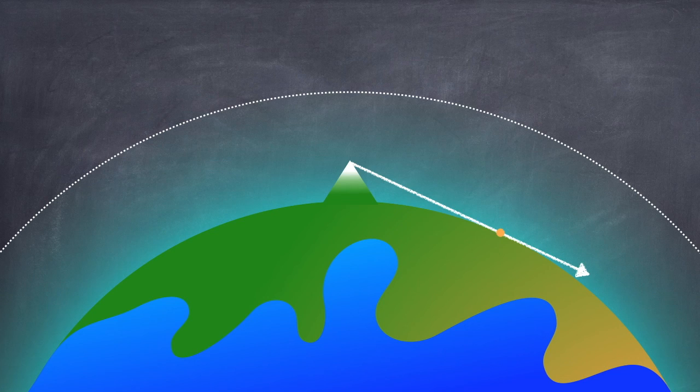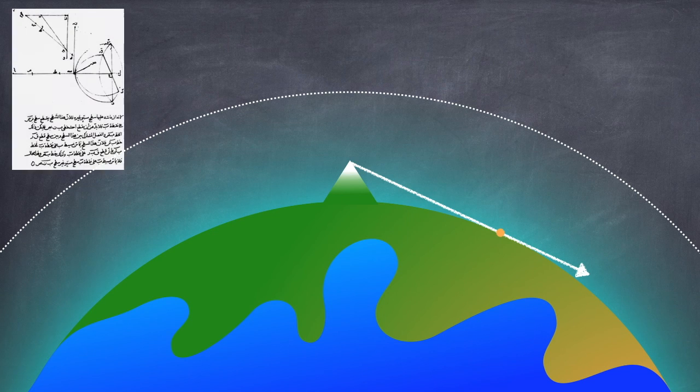Now the fact that light bends as it goes from one material to another was already well known, and in fact, Snell's law of refraction was first discovered during Albiruni's lifetime by a man named Ibn Sal. So he may have even been aware of it.